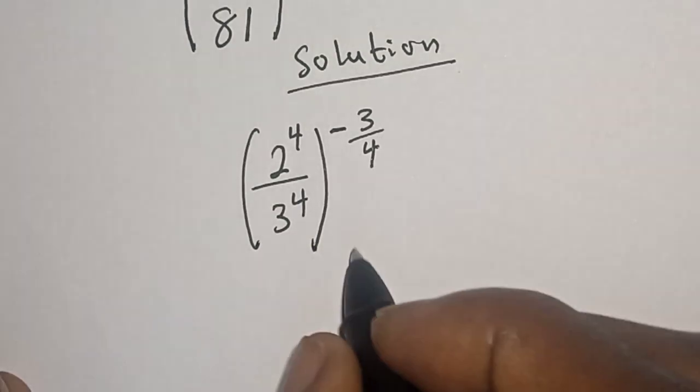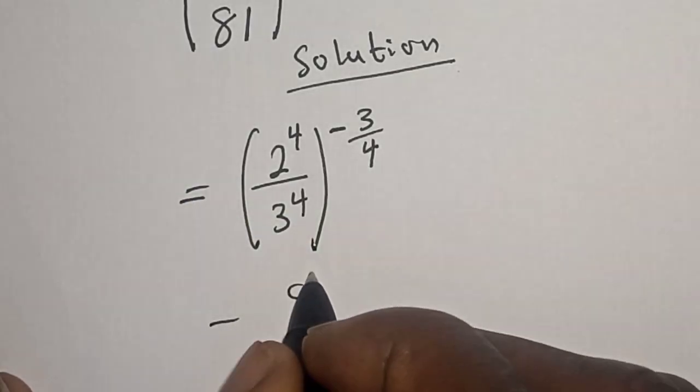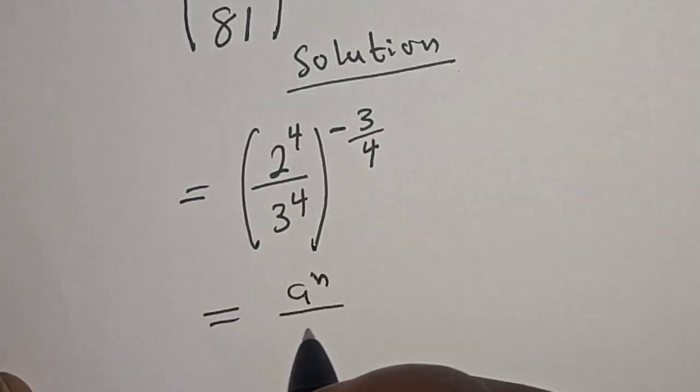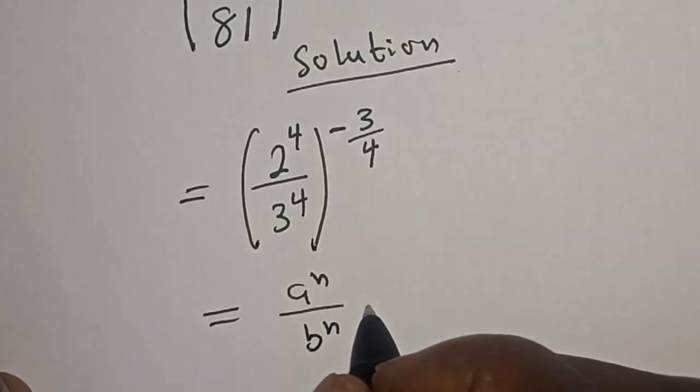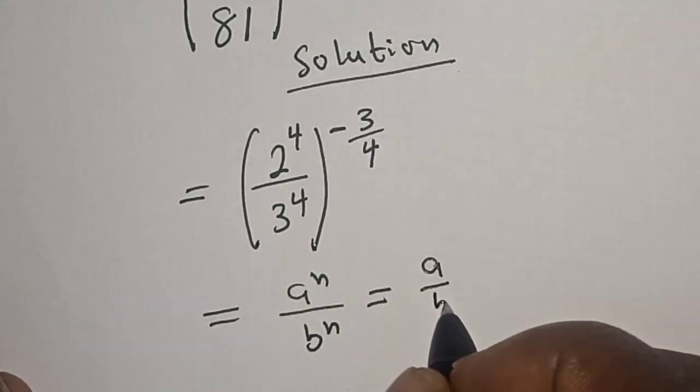Take note of this rule: if you have a raised power n divided by b raised to power n, this is equal to a over b raised to power n.